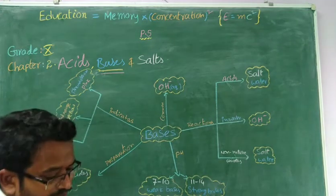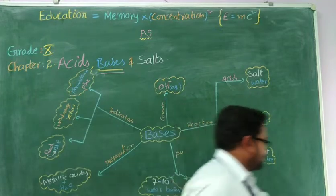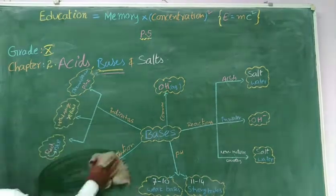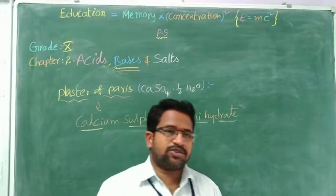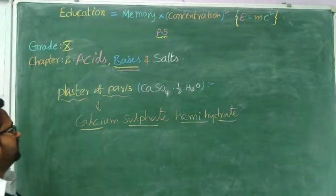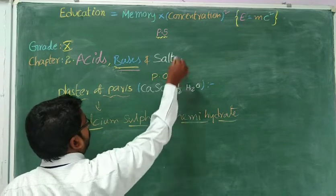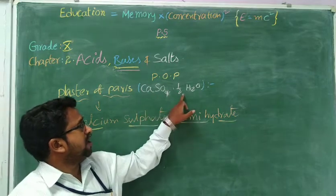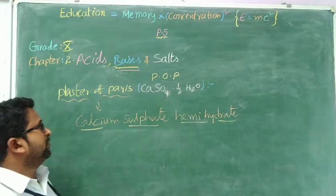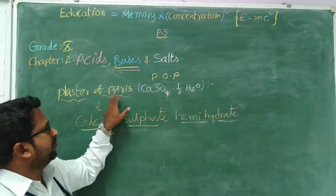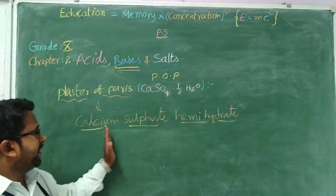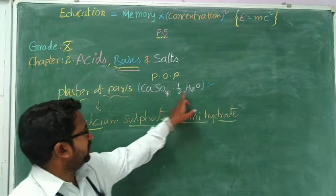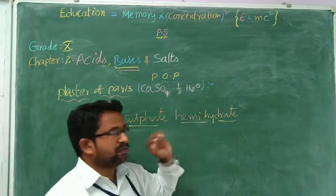Now, let us see about the POP — Plaster of Paris. The last topic is about Plaster of Paris, commonly called as POP. What is the formula? CaSO4 half H2O. What is the chemical name? Calcium sulfate hemihydrate. Calcium sulfate — hemi means half, hydrate means water. So the formula has half water molecules.